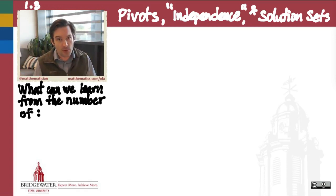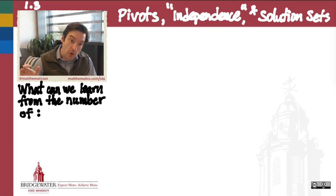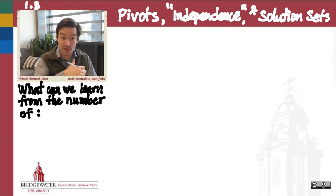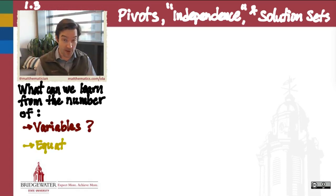So with that technique under our belt, I first want to begin by asking the following questions. Once we row reduce a linear system of equations, discover the pivots, find a description for its parametric solution set, what have we actually learned from that process about...